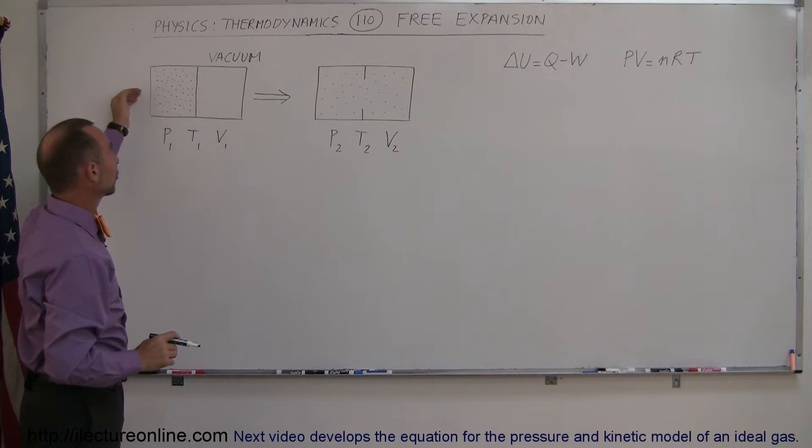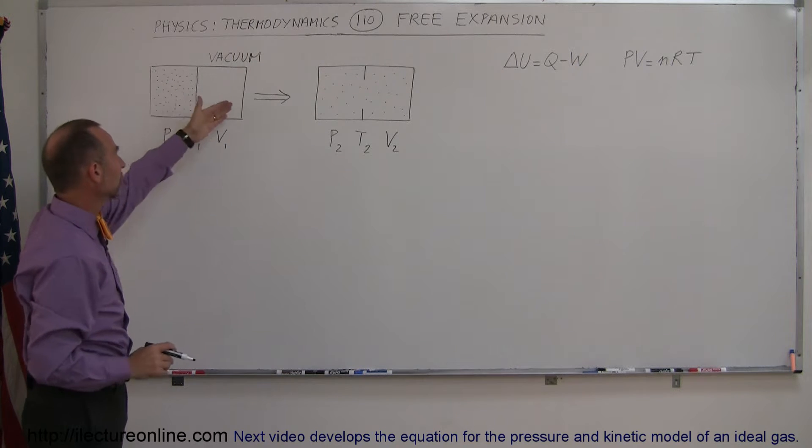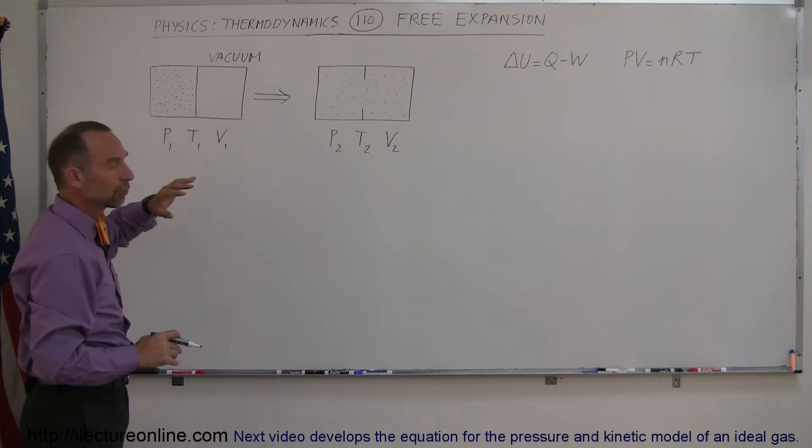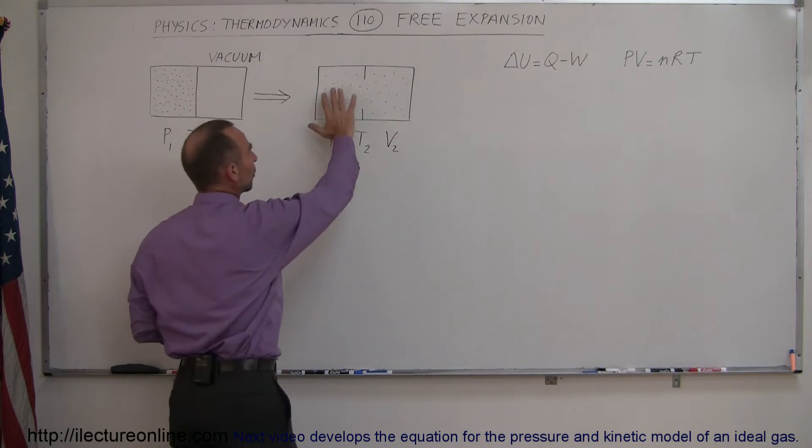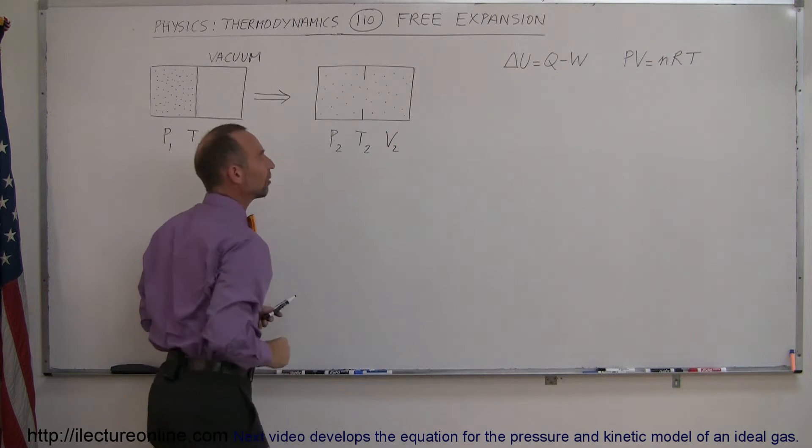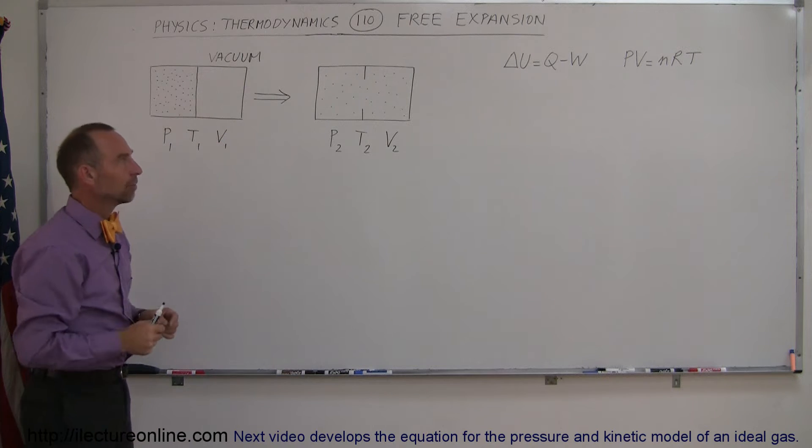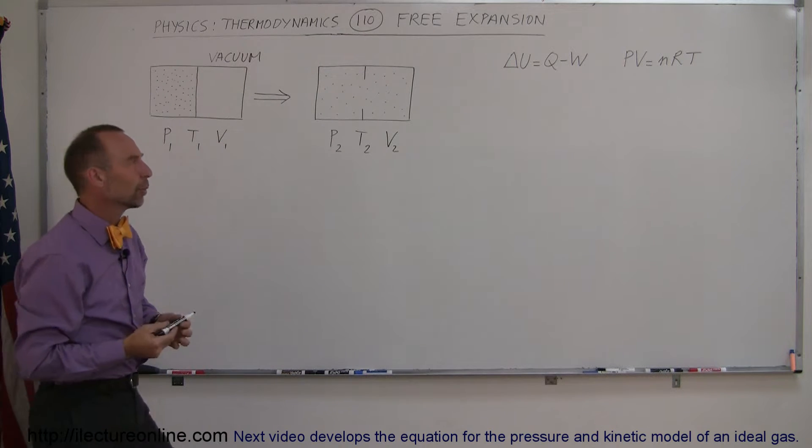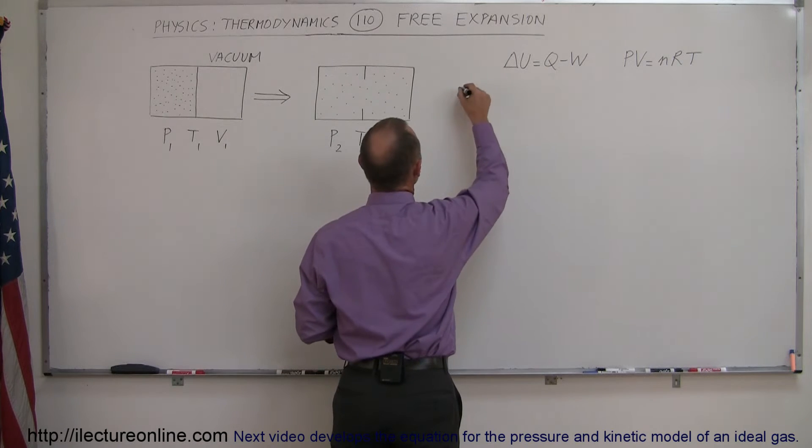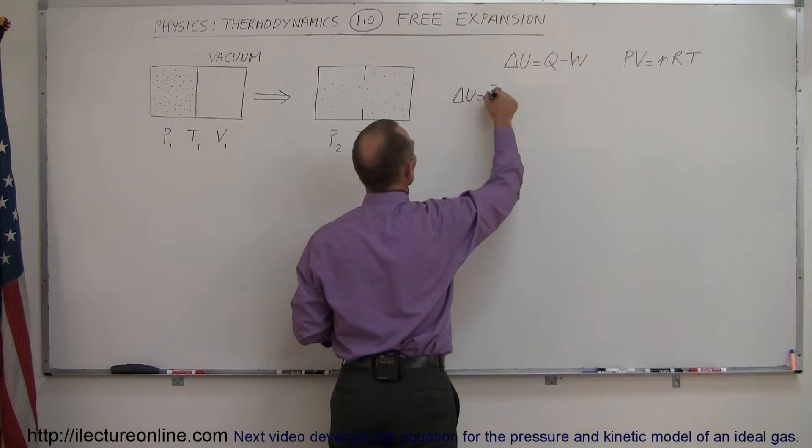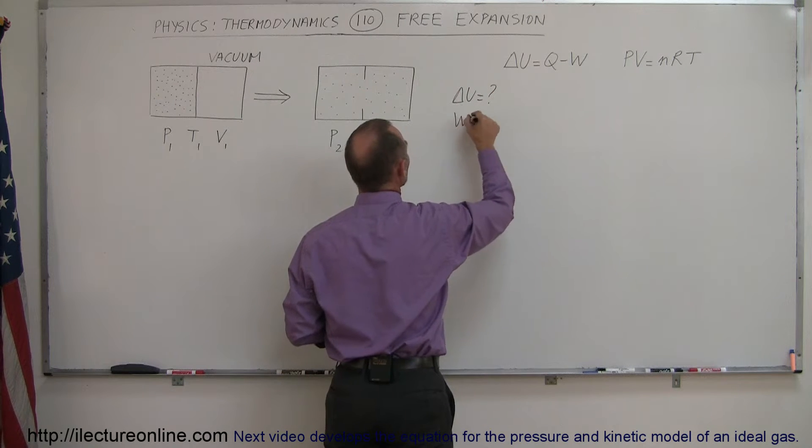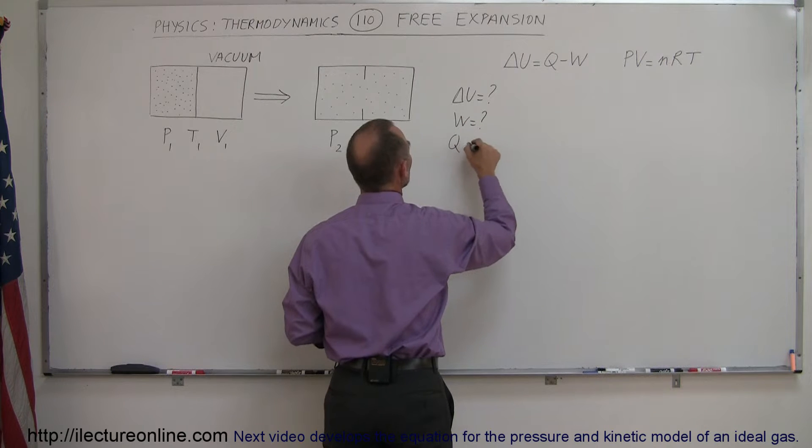So when the membrane is burst, so that now the gas can freely travel between the two halves, and then of course after a very short while the gas will equally fill both sides with the same amount of gas on both sides. How much work is done? What is the change in internal energy and so forth? So what is the delta U equal to? What is of course the work done equal to? And what is the heat exchange equal to?